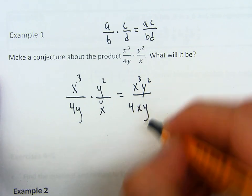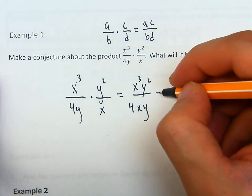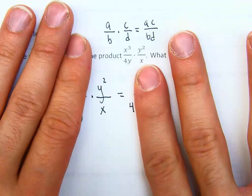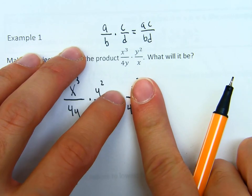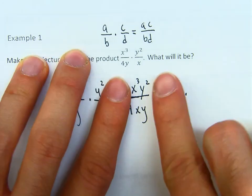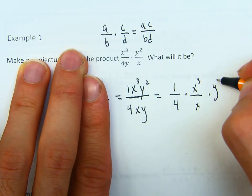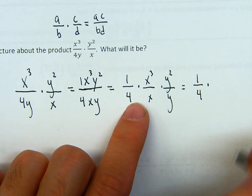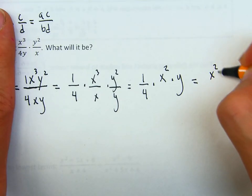So here we're going to multiply the top, giving us x cubed times y squared, and the bottom is 4xy. To simplify, think of chunks. There's an invisible 1 over 4, then x cubed over x gives x squared, and y squared over y gives y. So this simplifies to x squared y over 4.